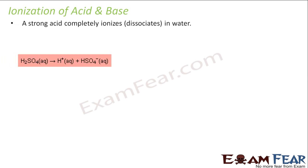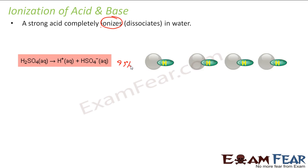We've already covered that a strong acid is something which is completely ionized in water. For example, H2SO4. If you see the one-sided reaction, this is not an equilibrium reaction because almost 99% of the H2SO4 is broken into H+ and HSO4- ions.